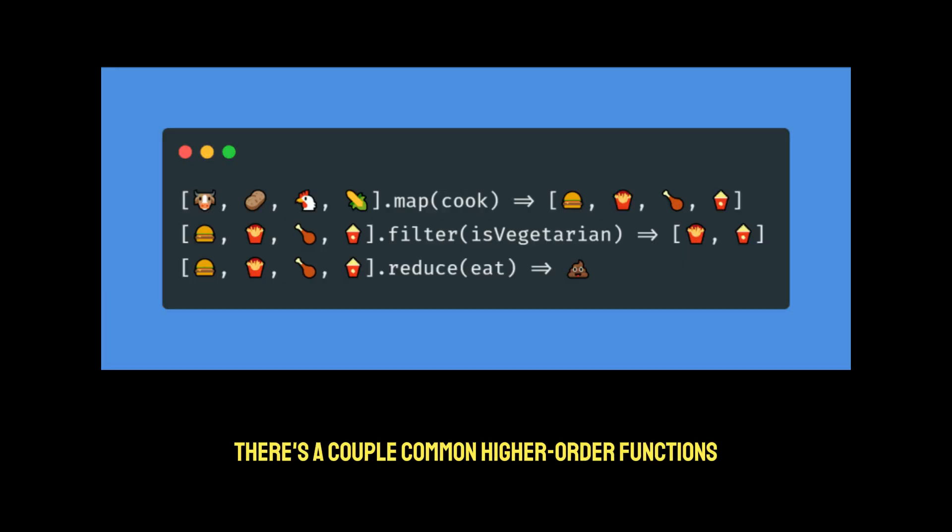There's a couple common higher order functions. We have map, which transforms each element in a collection. There's filter, which keeps elements that satisfy a given condition. And there's also reduce, which combines elements into a single value.